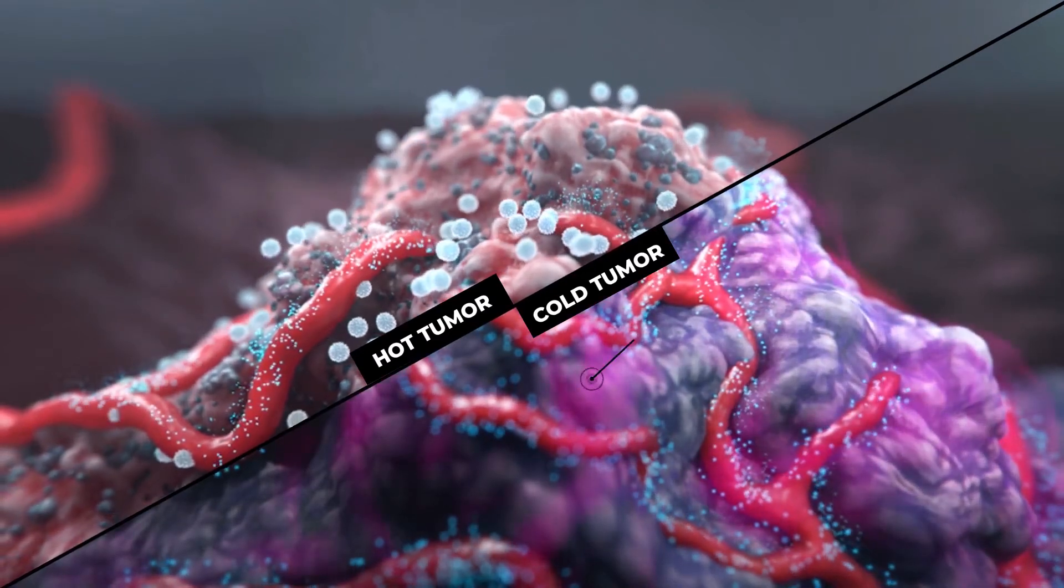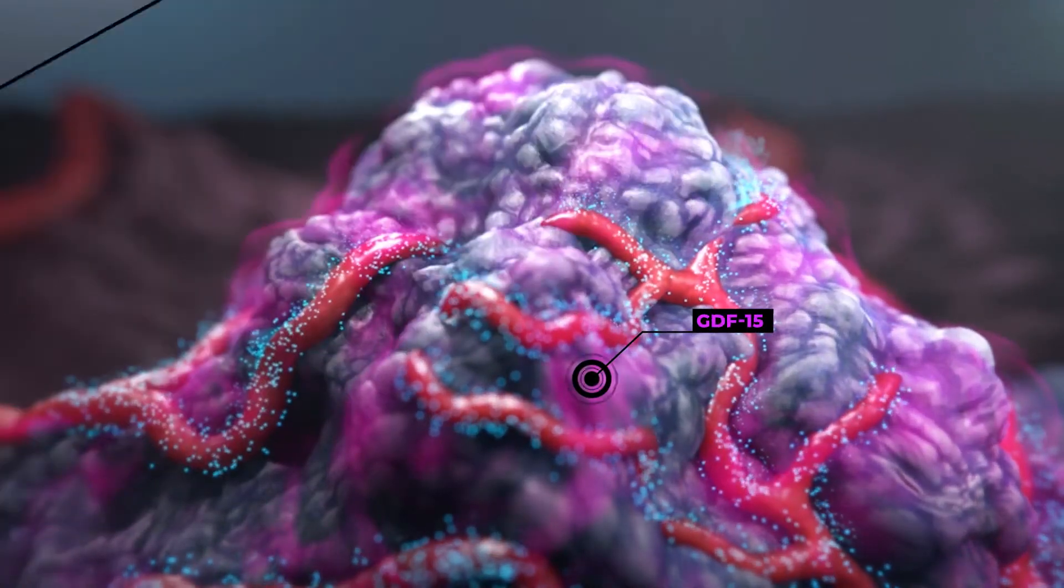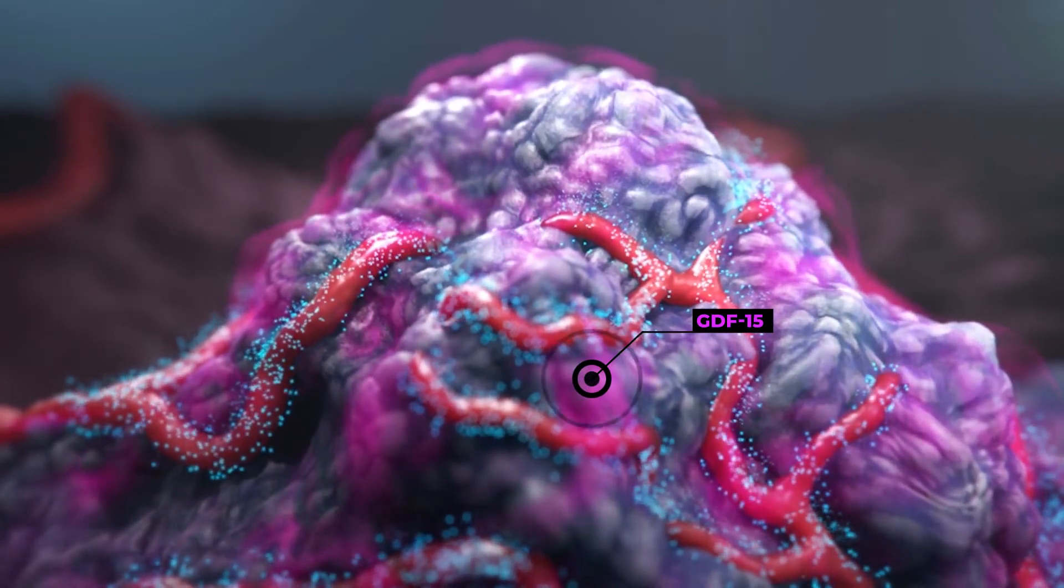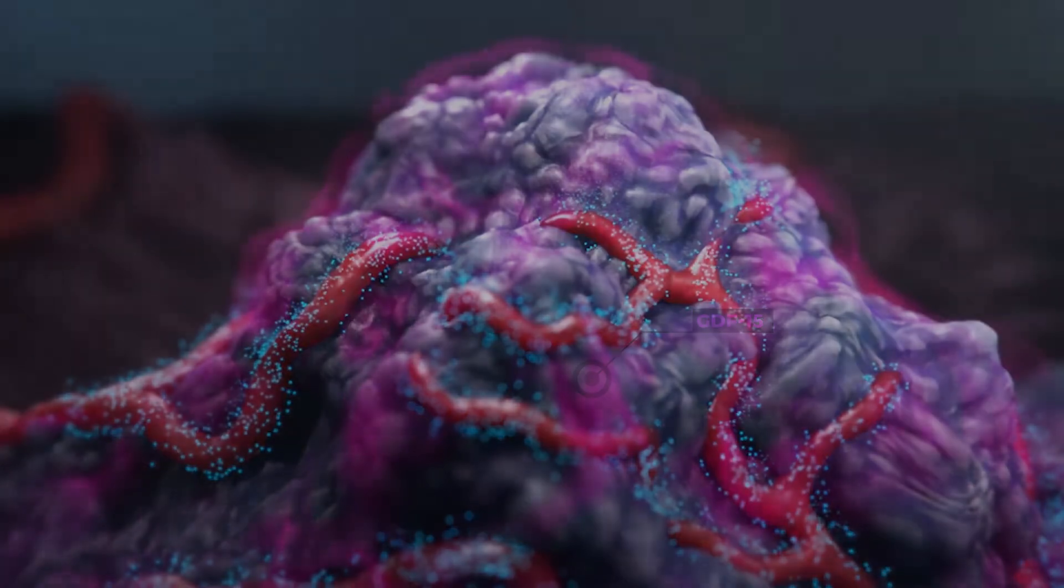Catalim has identified a novel target, GDF-15, secreted by cold tumors, which prevents immune cells from entering the tumor microenvironment.